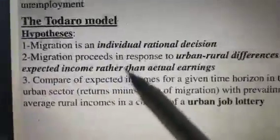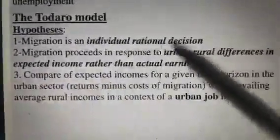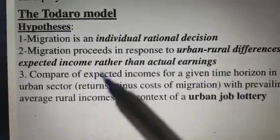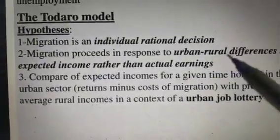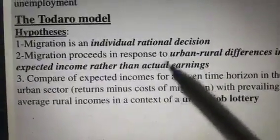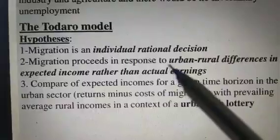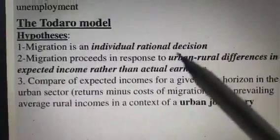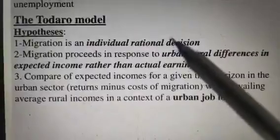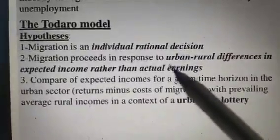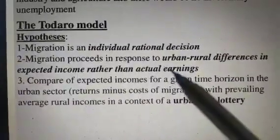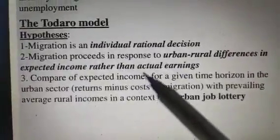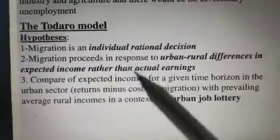The second hypothesis is that migration proceeds in response to urban-rural differences in expected income rather than actual earnings. This is very important. People move from rural to urban areas for certain expected earnings, but actually they receive a different type of earnings — maybe less than expected.